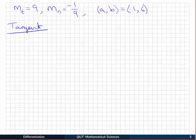So we have all the information we need. The slope of the tangent, the slope of the normal, and the point.